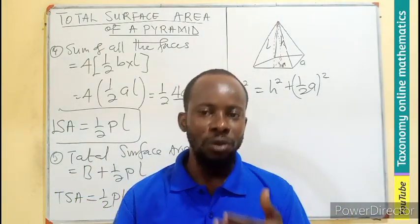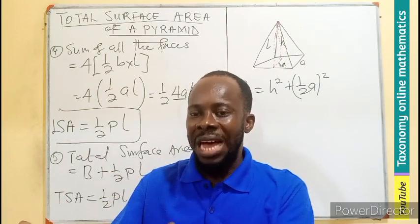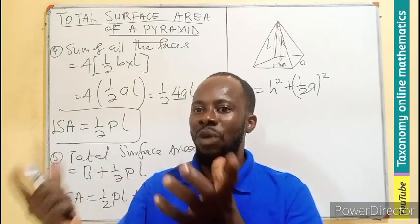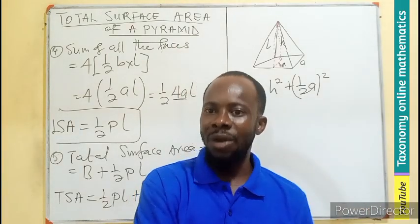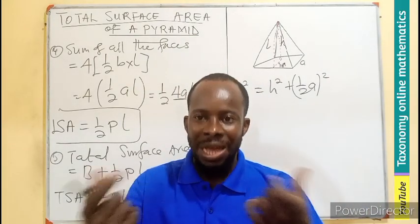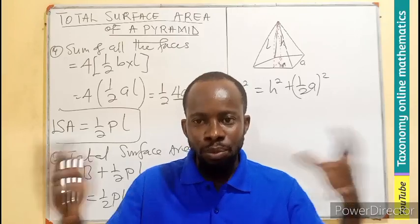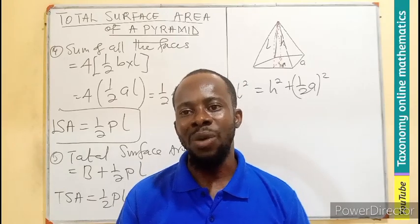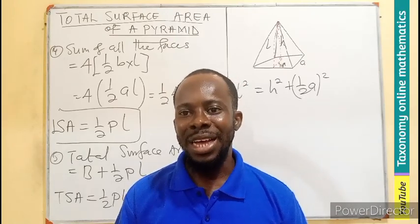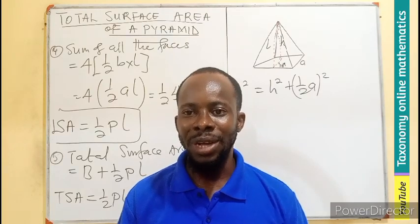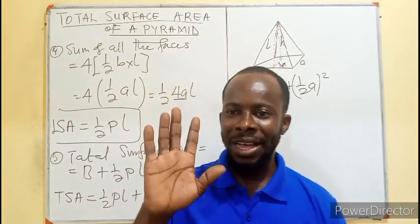In the next episode we will be taking each type of pyramid — the circular base (cone), triangular base, square base, and rectangular base — one after the other, and putting them together in questions to see how best we can solve them. Thank you for watching; don't forget to share, like, and comment. Bye bye.